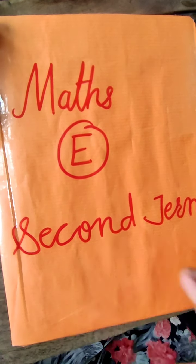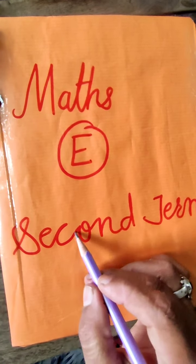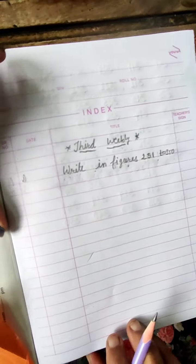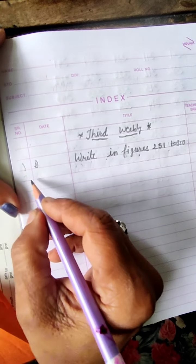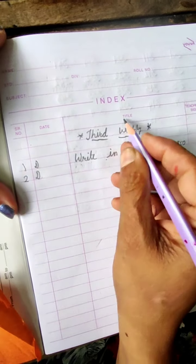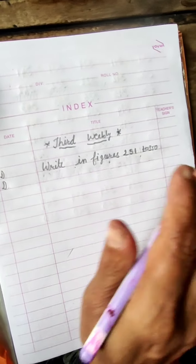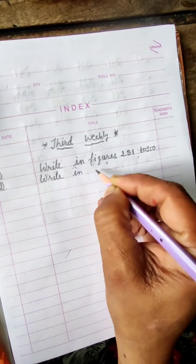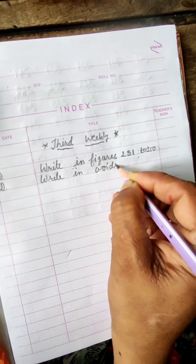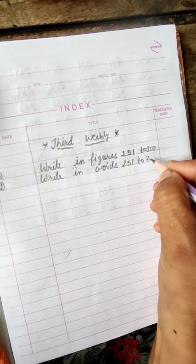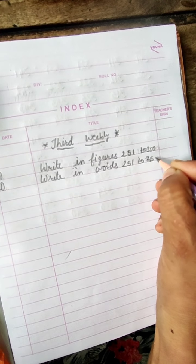Hello students, open your map in second term notebook and open your notebook's index page. Write in the serial number 2, today's date over here. In the title, you have to write: write in words 251 to 350.